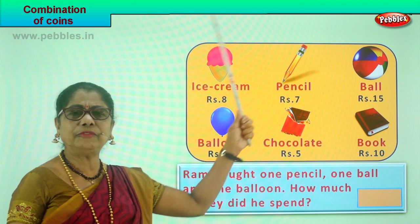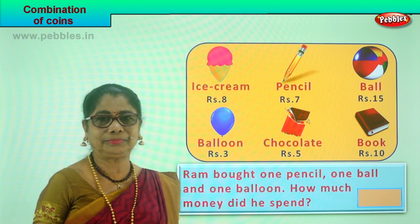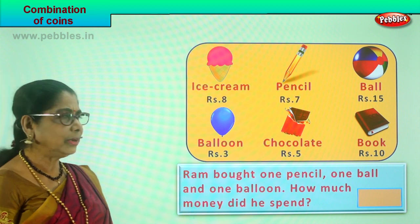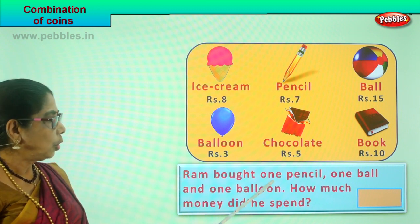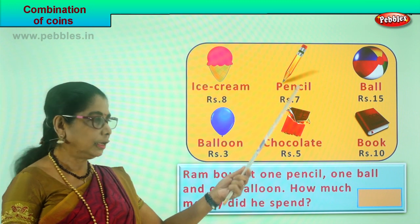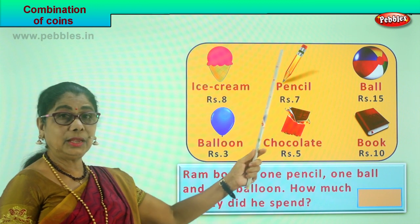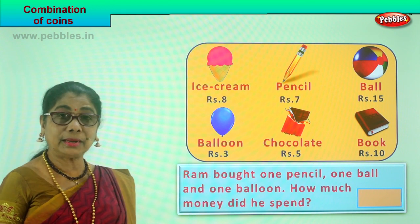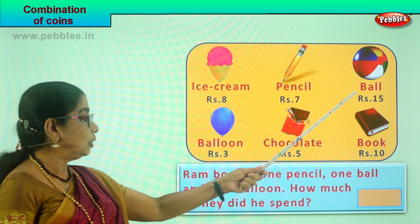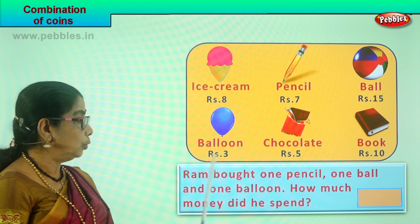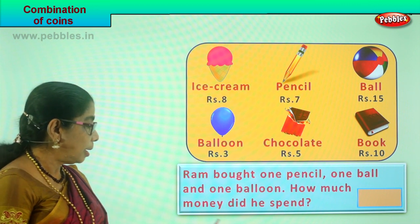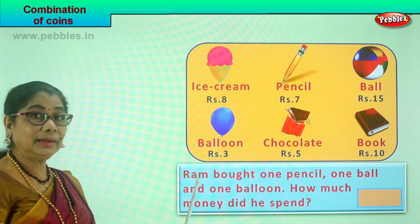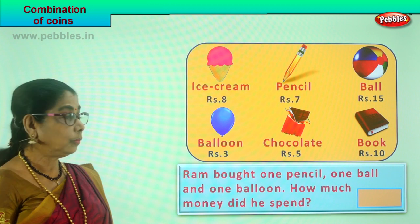What have you decided to buy from the shop? Ram bought one pencil, one ball, and one balloon. Ram is taking a pencil, he wants a ball, and he wants a balloon. The question is: how much money did he spend, or how much money should Ram give the shopkeeper? What is the total amount for a pencil, ball, and balloon?